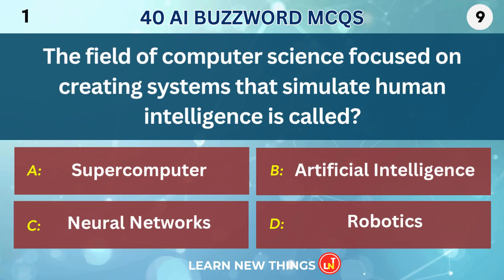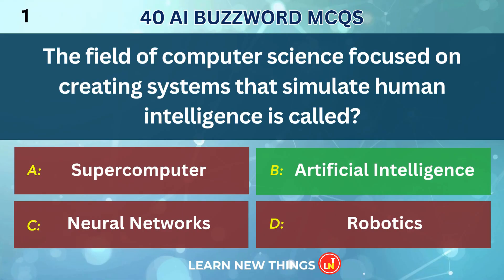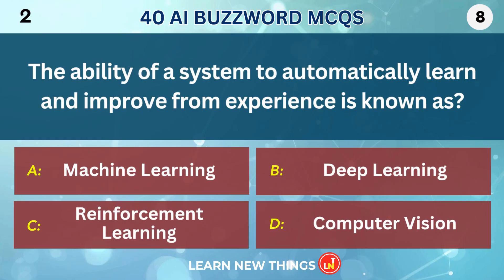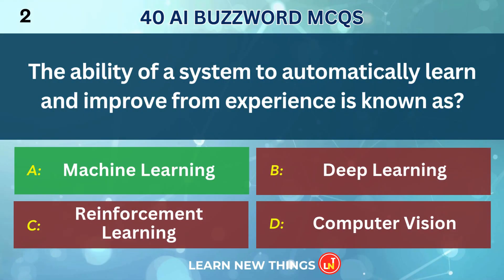The field of computer science focused on creating systems that simulate human intelligence is called Artificial Intelligence. The ability of a system to automatically learn and improve from experience is known as Machine Learning.